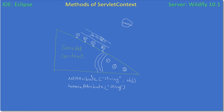Now, how do we get the object? There are two methods. We can store an object inside the servlet context using setAttribute, or you can even store it using web.xml.